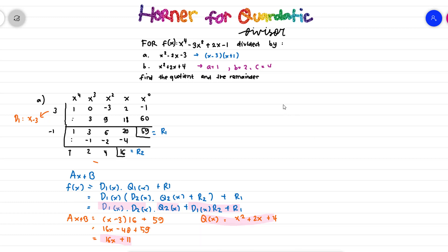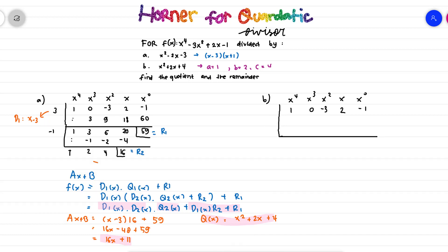For Part B we list the coefficients the same way: x to the power of 4, x cubed, x squared, x, and x to the power of 0, with coefficients 1, 0, minus 3, 2, and minus 1. What is different here is that we will perform the two stages together.